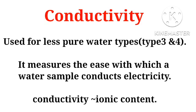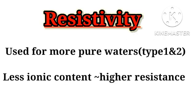Let us see what is conductivity. This term is usually used for less pure water types, that is type 3 and type 4 water. It measures the ease with which a water sample conducts electricity. Conductivity is directly proportional to the ionic content of the water — more the ionic content, more the conductivity.